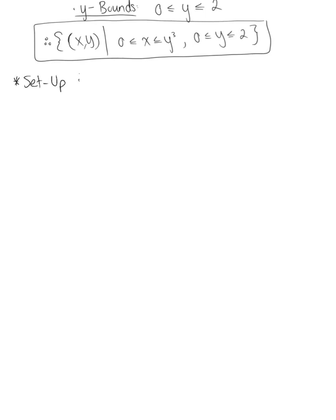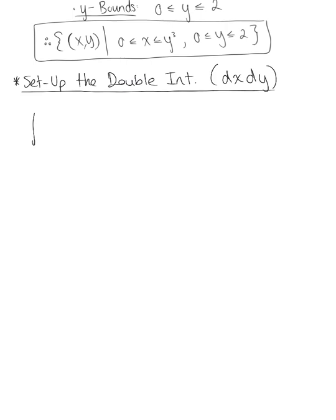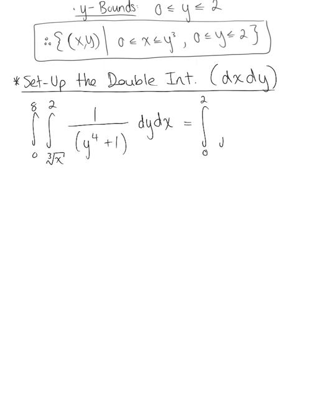We set up the double integral using the order dx dy. We were given the integral from 0 to 8, the integral from the third root of x to 2, of 1 over y to the fourth plus 1, dy dx. Switching the order to dx dy, the outer bounds are now 0 to 2 for y, and the inner bounds on x are from 0 to y cubed. The function remains 1 over y to the fourth plus 1, and the order is now dx dy.